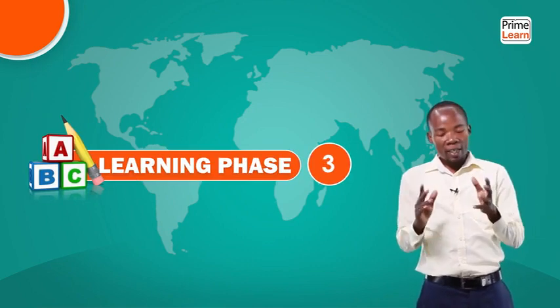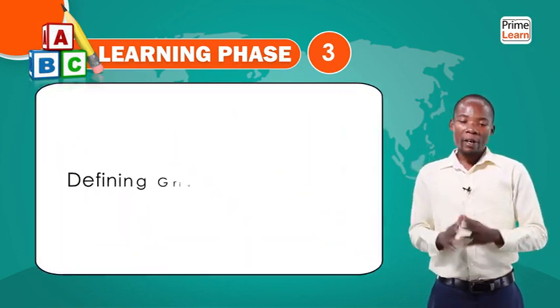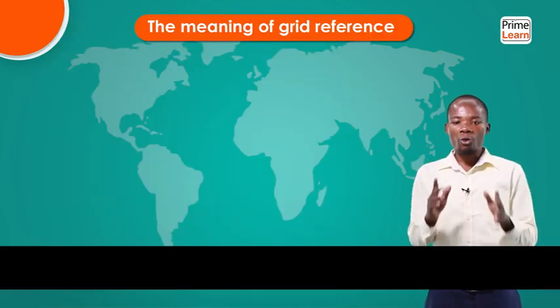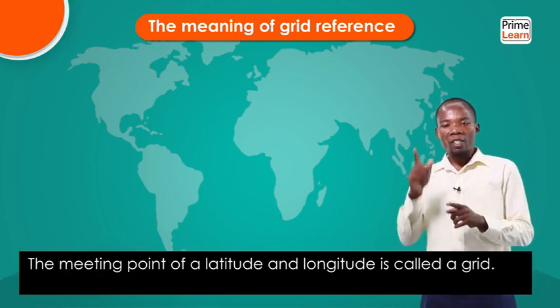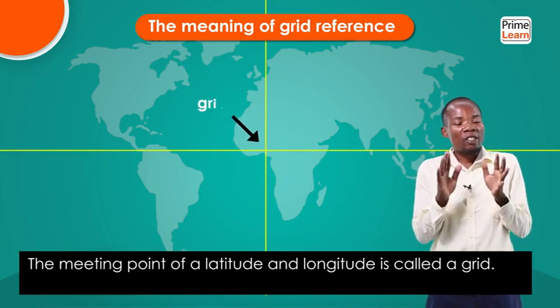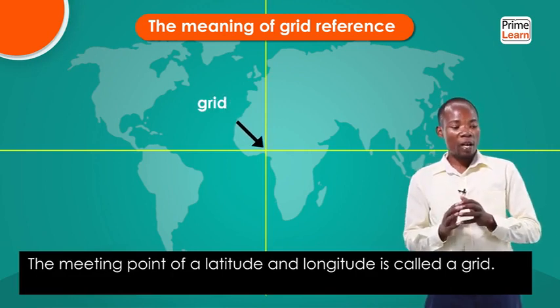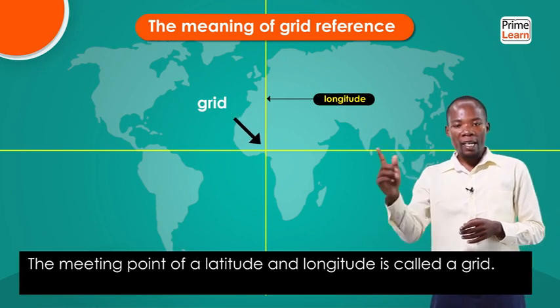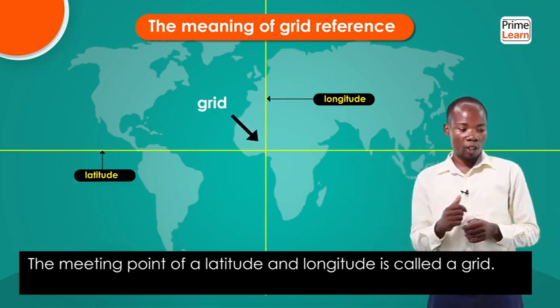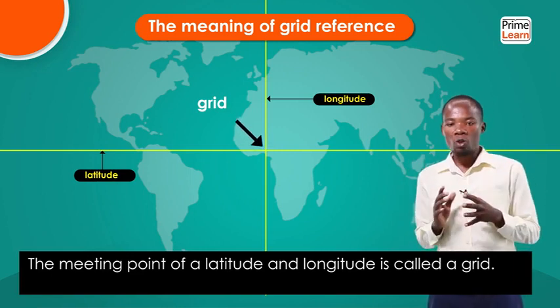Welcome back from that simple activity. Let me hope you all got 100%. We are now going to our first competence: defining the term grid reference. Grid reference is the method of locating places using lines of latitude and lines of longitude. The meeting point of a line of longitude and a line of latitude is known as a grid, as we can see on our screen.